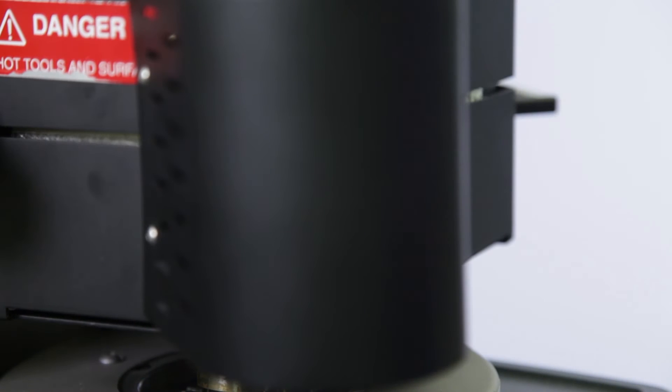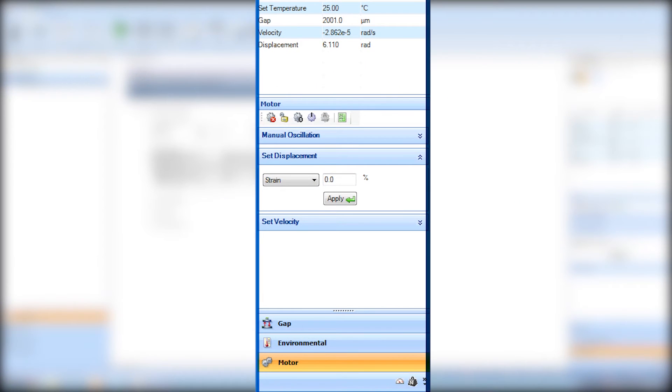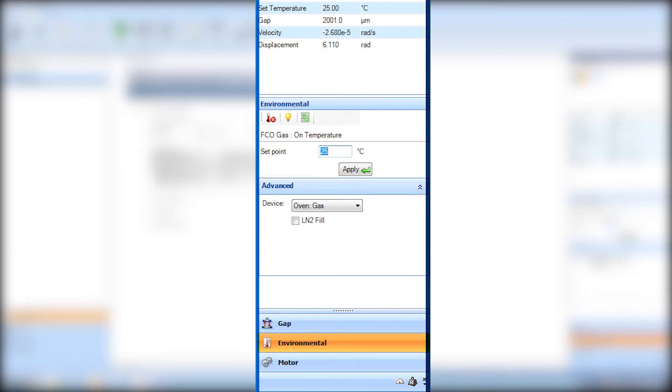Close the FCO and heat to the desired temperature using the appropriate purge gas. Here we will be using gas selection, which will be plumbed with house nitrogen. For best results, allow adequate time for geometry thermal equilibration before zeroing the gap.